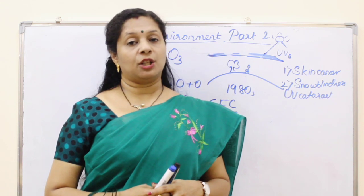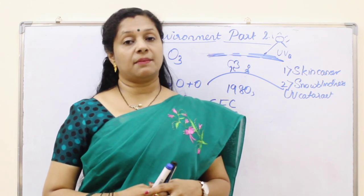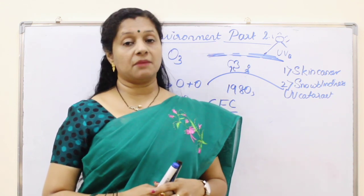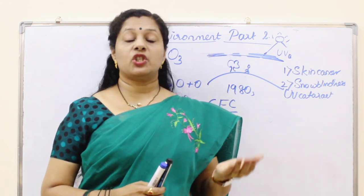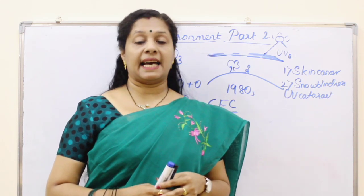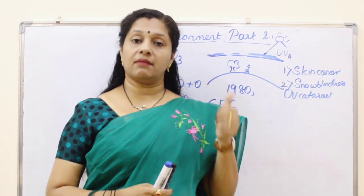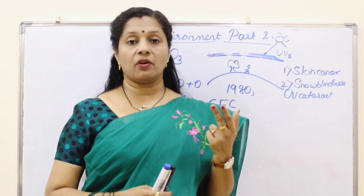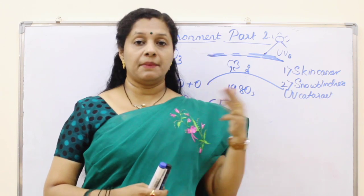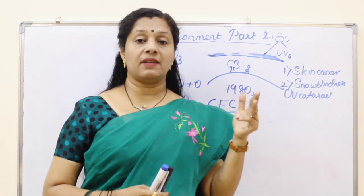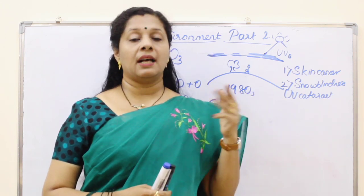What is the environment? What is the ecosystem? What is the food chain? The food chain characteristics are: 1% low, 10% low, unidirectional flow of energy, and a limited number of trophic levels in the food chain.